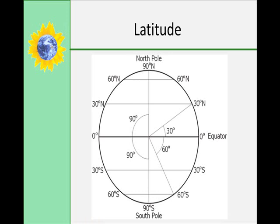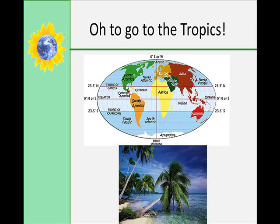Imaginary lines drawn around the earth parallel to the equator are called parallels. The latitude of the equator is zero degrees. The highest degrees of latitude are 90 degrees north at the north pole and 90 degrees south at the south pole. These poles are located at the ends of the earth's axis, which is an imaginary line extending through the center of the sphere. Every 24 hours the earth rotates on its axis, causing day and night. Latitude lines are small circles.